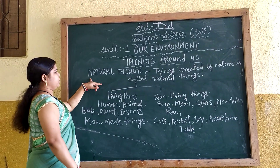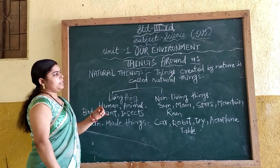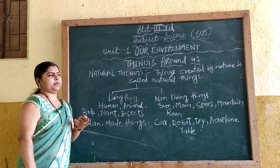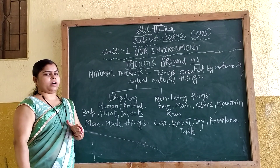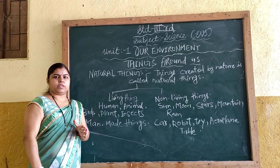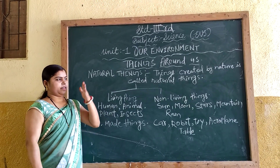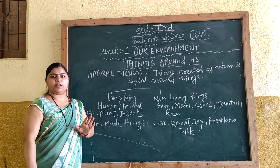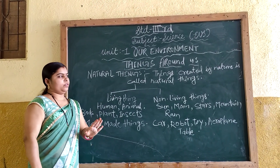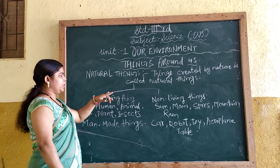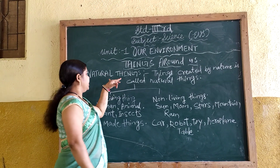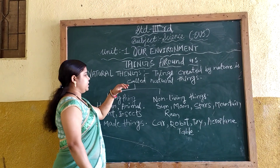Next, natural things. Things created by nature are called natural things. Jo prakriti ki dwara nirmit hai, usse hum kya bolte hai? Natural things.